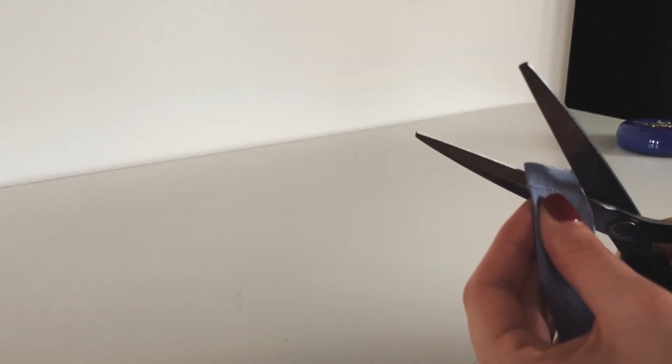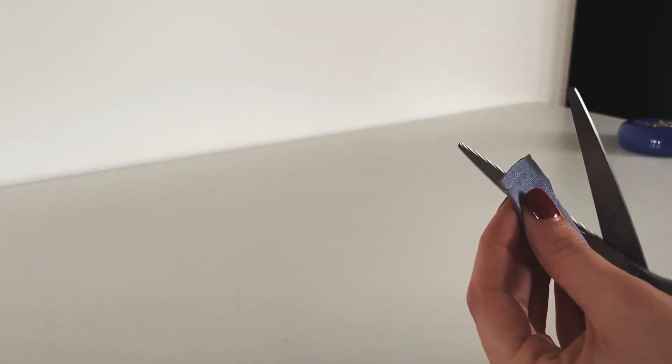Trim the excess fabric from the corners of the straps. This step helps reduce bulk and ensures crisp, clean corners when the strap is inverted. Grab a long stick to aid in turning the straps inside out and hold it in between your legs. I use a screwdriver.